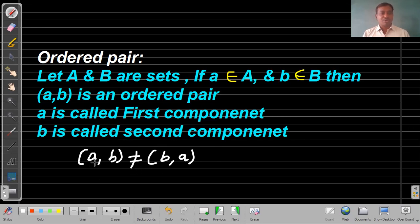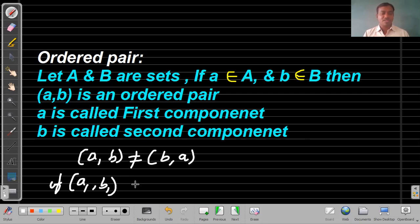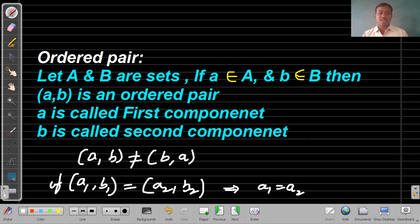The first coordinate in (a, b) is 'a', and in (b, a) it is 'b', so they are not equal to each other. If (a1, b1) equals (a2, b2), then we can say that a1 equals a2 and b1 equals b2.